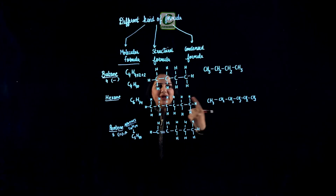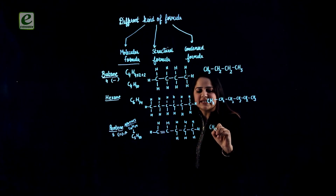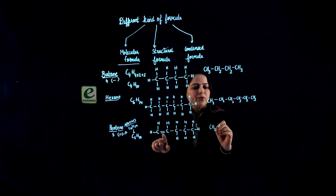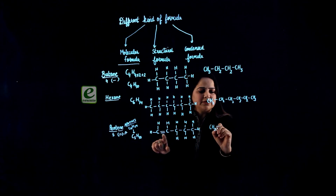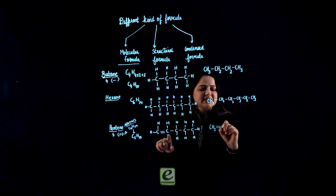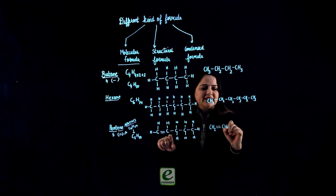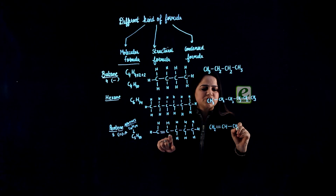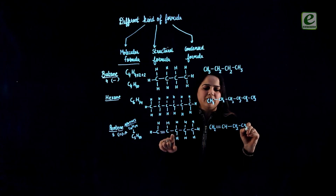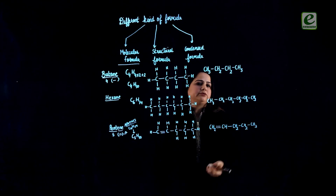To write down the condensed formula: the first carbon is associated with 2 hydrogens, and after that we have a double bond. So we write down the double bond. This carbon is associated with 1 hydrogen, then a single bond with 2 hydrogens, then another carbon with 2 hydrogens, and the last carbon with 3 hydrogens.